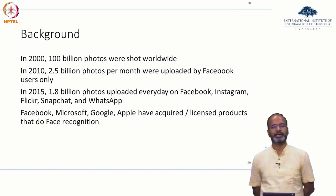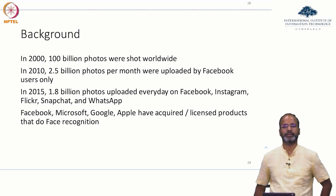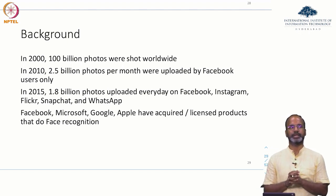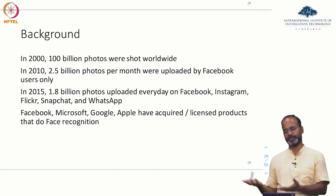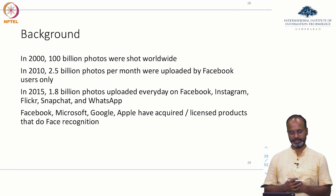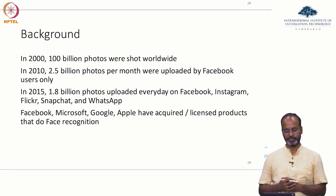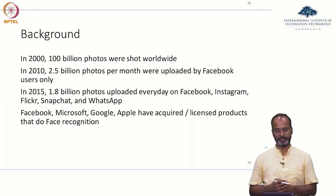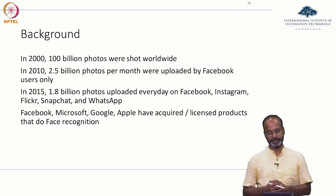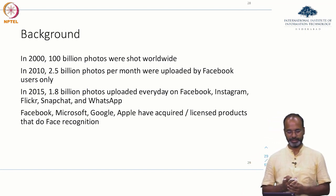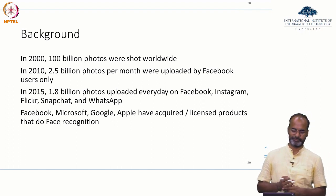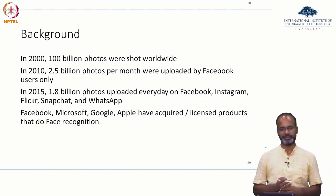This is giving you some numbers about the status at that point, and I have added some 2015 numbers — I am sure you can add some numbers even more recently. In 2000, 100 billion photographs were shot worldwide. In 2010, 2.5 billion photos per month were uploaded on Facebook. In 2015, 1.8 billion photos were uploaded every day on Facebook, Instagram, Flickr, Snapchat and WhatsApp.